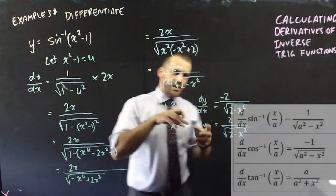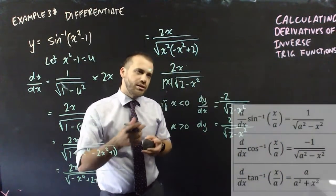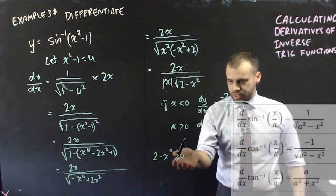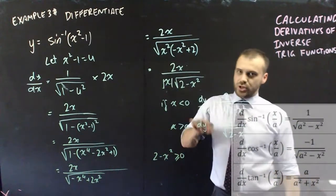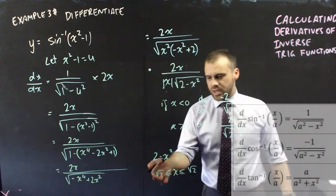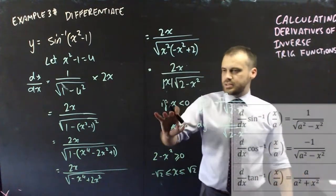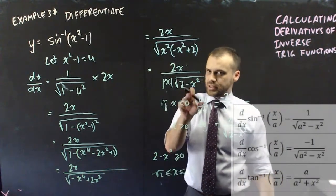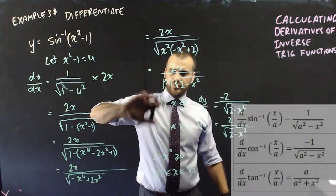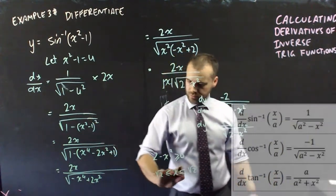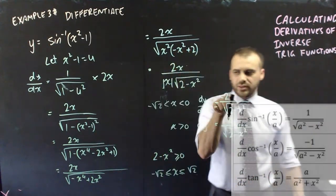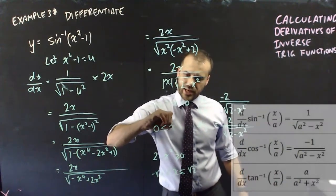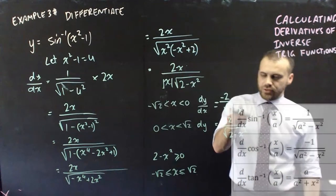But there are some more bounds on this, right? Because this thing here can't be less than 0, which of course means it must be greater than 0, and then if we solve that, we're going to get x being between negative root 2 and positive root 2. That means that I can sort of change these bounds a bit and say, if x is less than 0 and more than negative root 2, then this must be true. And if 0 is less than x which is less than root 2, then this thing must be true.